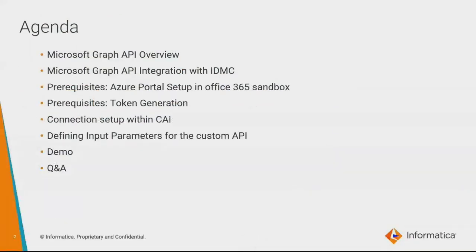Thank you for the introduction. We'll be starting off with the agenda for today. First, we'll be talking about the Microsoft Graph API overview, followed by Microsoft Graph API integration practices with IDMC Cloud Application Integration. After that, we'll cover the prerequisites, divided into two sections: Azure portal setup using an Office 365 sandbox environment, and the token generation process. Then we'll cover the connection setup within CAI, defining input parameters for the custom API, followed by a demo, and we'll wrap up with Q&A.